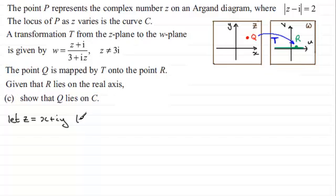So if we do that then what we get is that W will equal, for Z here we'll put X plus iY, and then we've got plus another i. And then we're dividing all of this by 3 plus iZ. So it will be 3 plus i all multiplied by Z which is X plus iY.